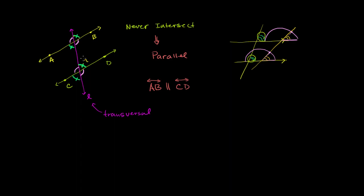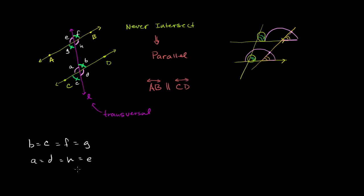Now let me label these angles using lowercase letters — a, b, c, d at one intersection and e, f, g, h at the other. We know from vertical angles that b is equal to c, but we also know that b is equal to f because they are corresponding angles, and that f is equal to g. So vertical angles are equivalent, corresponding angles are equivalent, and therefore b is equal to g. These are called alternate interior angles — they're between the two lines but on opposite sides of the transversal. We also know that a equals d equals h equals e.